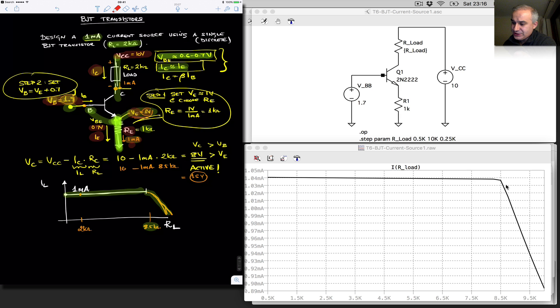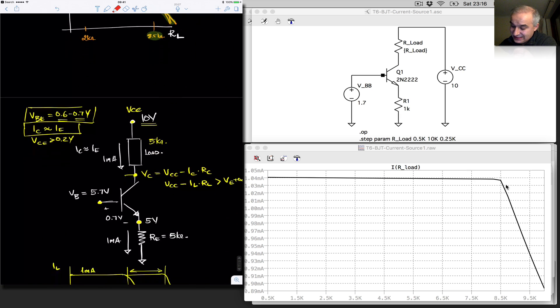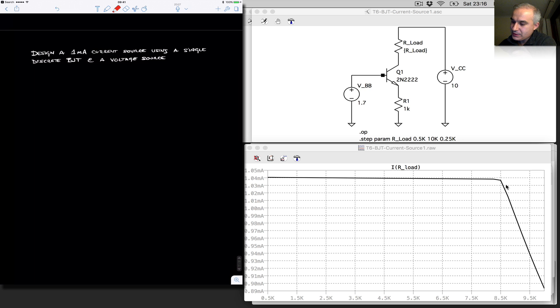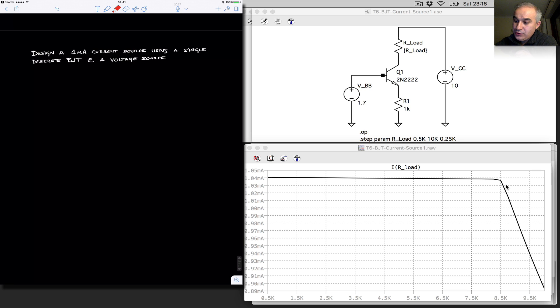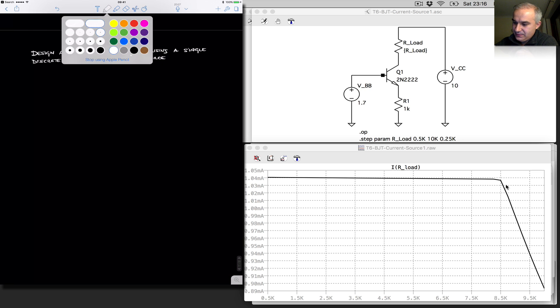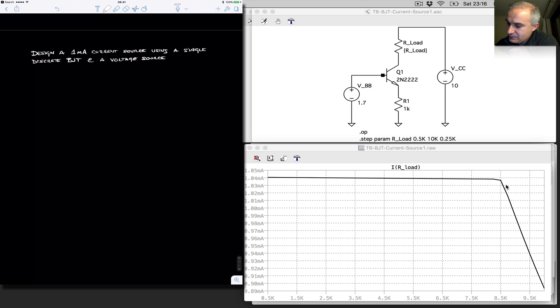So if we wanted to use a single supply, we still need to bias the transistor, but we could use a voltage divider to do that. Let's look at a skeleton of the circuit.